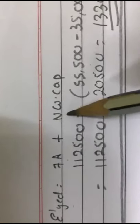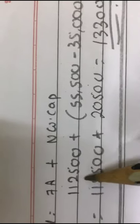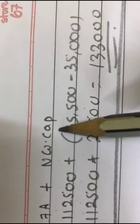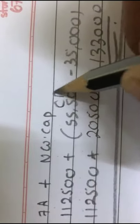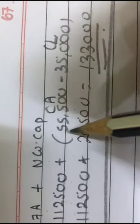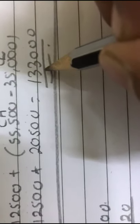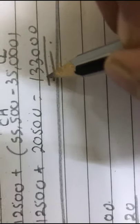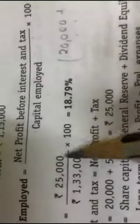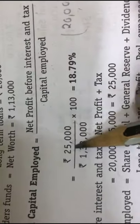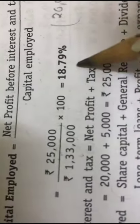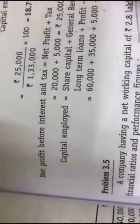Under the asset-based approach, capital employed equals fixed assets plus net working capital. Fixed assets are Rs. 1,12,500, and net working capital is current assets minus current liabilities: 55,500 minus 35,000. The answer is again Rs. 1,33,000. Whichever method you follow, the answer should be the same. Substituting in the formula: 25,000 divided by 1,33,000 multiplied by 100 gives 18.79%.